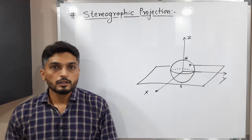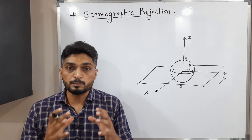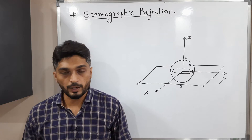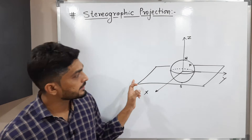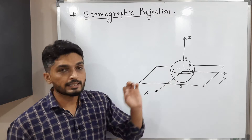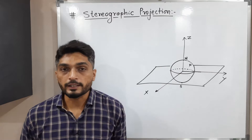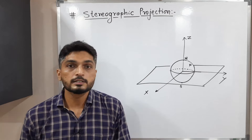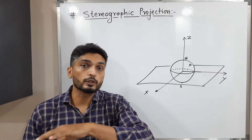Let us discuss the concept of stereographic projection. Consider a complex plane — we have one complex plane and a unit sphere, meaning a sphere with center at the origin with radius one. The center of the sphere lies at z equals zero. This is the complex plane with real axis and imaginary axis cutting at z equals zero. At the top of the sphere we have a point called the north pole, and at the bottom we have the south pole. The line passing through north and south poles is exactly perpendicular to the complex plane.